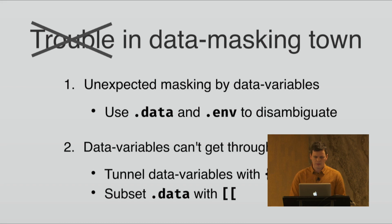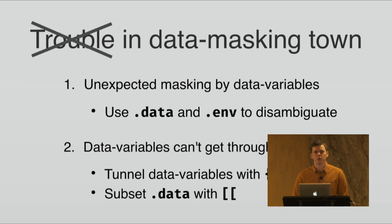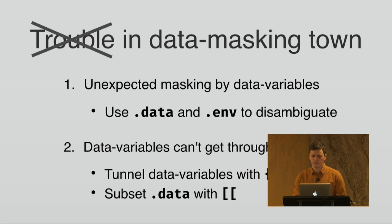So that's how you deal with these two problems. If you have unexpected masking and you're worried about that, use the `.data` and `.env` pronoun to disambiguate. And if you want to create a function and deal with the problem of taking arguments which might contain data variables, you tunnel them with the double curly operator, or you subset the data with the double bracket if you want to take column names as strings instead.